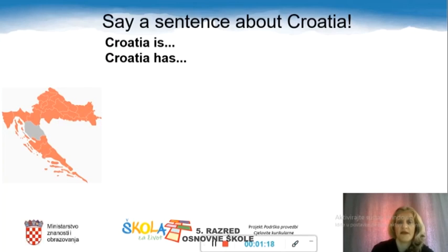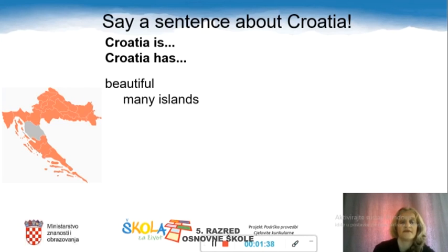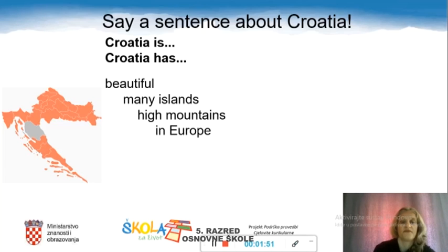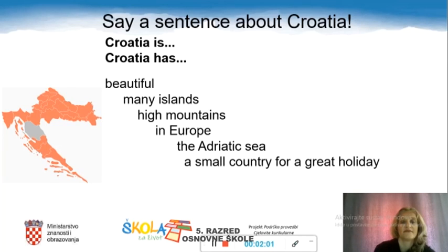And now please tell me a sentence about Croatia. You can start with 'Croatia is' or 'Croatia has.' Croatia is beautiful. Croatia has many islands. Croatia has high mountains. Croatia is in Europe. Croatia has the Adriatic Sea. And Croatia is a small country for a great holiday.